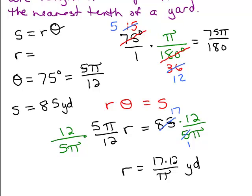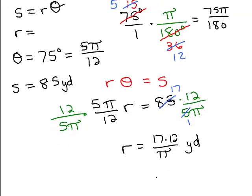So let's do that in the calculator. So we have 17 times 12 divided by pi. And that is approximately, if I round it, 64.9 yards.